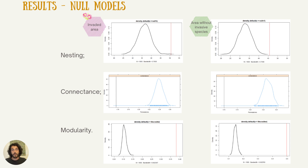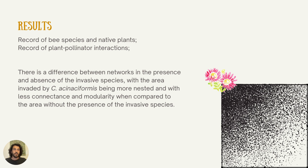The null models confirmed that all our results were statistically significant and different from what was expected by chance. We also recorded native plant and pollinator interactions not previously documented, which is very important for understanding and preserving biodiversity. We found that the presence of Carpobrotus in interaction networks makes them more nested and reduces connectance and modularity compared to areas without it.